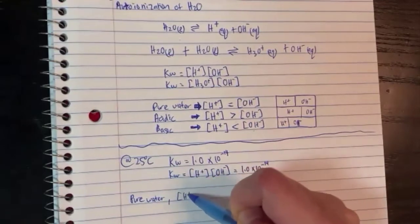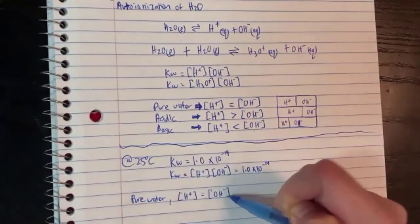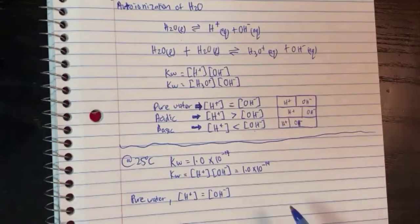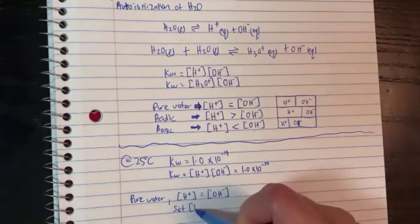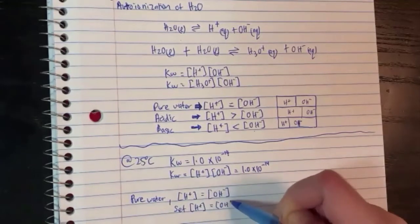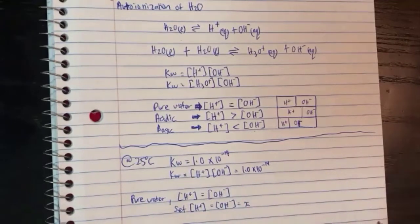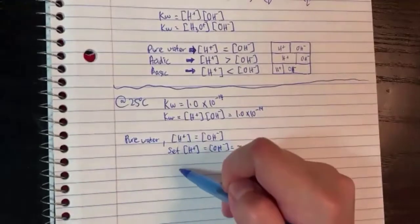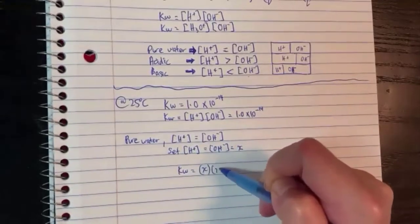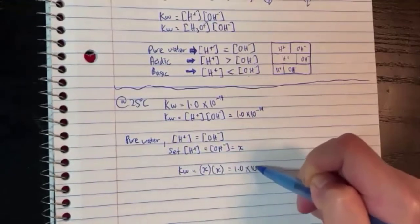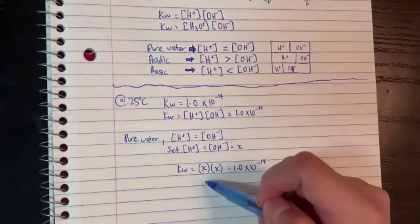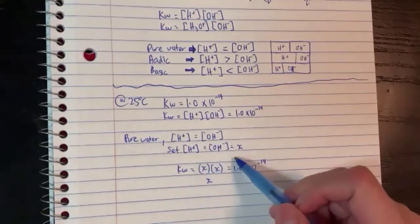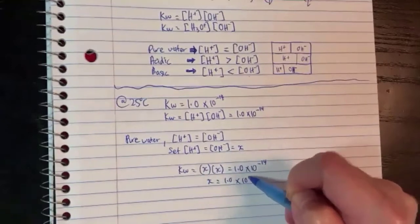For pure water, we also know that H and OH are equal. So if at 25 degrees H times OH equals 1.0×10⁻¹⁴, and we know these two are the same, we set H and OH to the same value X. That means KW for pure water is X times X equals 1.0×10⁻¹⁴. Then I can solve for X. X is just the square root on both sides, which equals 1.0 times 10 to the minus 7.